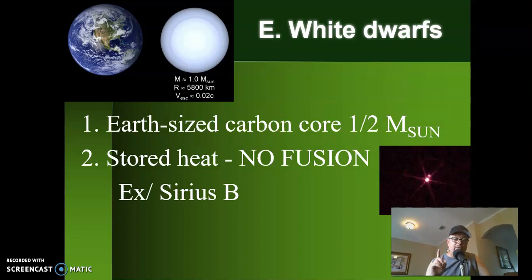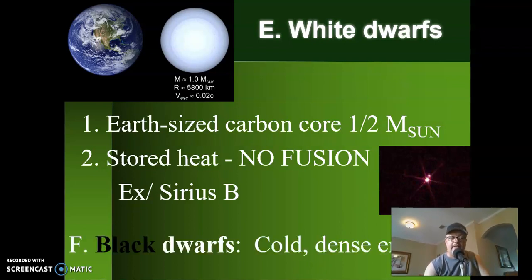The only example you need to know for the test, Sirius B and guess which star it orbits. You got it, Sirius, the brightest star in the sky. Here's a picture right there. Look at that. There's Sirius, the bright star you see in the winter sky. And right there you can see Sirius B orbiting it. And that's a white dwarf. That's a star that's done. It's burned out. Okay. It's at the end.